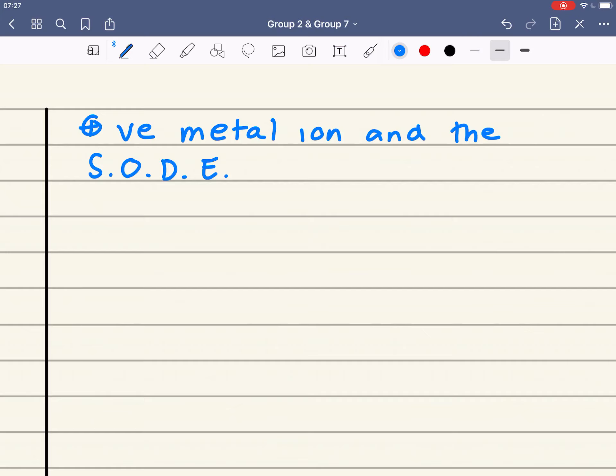Now, how does metallic bonding then change down the group? Or, how does the strength of metallic bonding, I should say, change down the group? Well, the metallic bonding gets weaker. And, we'll explain why in a sec. So, if that's the case, what we're going to say then is that the melting point decreases down the group.